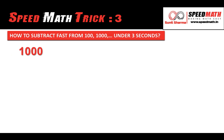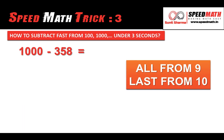Let's say if you want to subtract 358 from thousand. There are two conditions. First of all, the number of zeros should be equal to the number of digits in the number which we are going to subtract. Here we have three zeros and the number we need to subtract has three digits. This technique will work only if the number of zeros equals the number of digits in the number being subtracted.